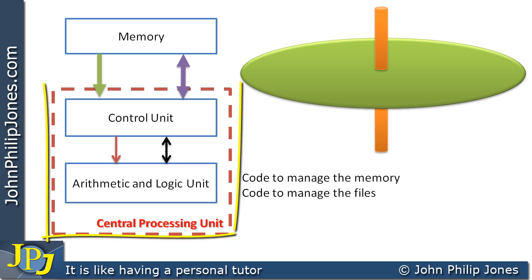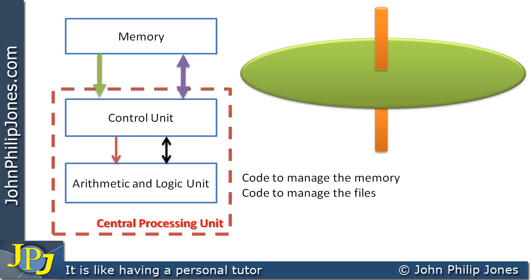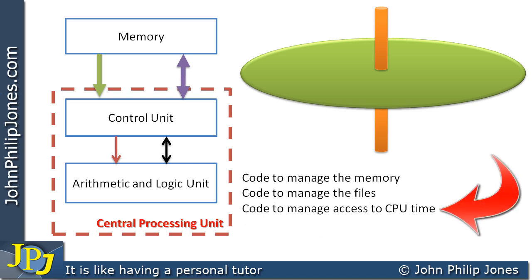Let's now turn our attention to the central processing unit by looking at a particular scenario. Say the computer's memory has two applications: a word processor and a web browser. The web browser is currently executing and downloading a web page. The user then clicks spell check on a document. To the user it appears that both processes are executing simultaneously. In fact, at the machine level, the machine code for one application executes for a brief period, then the operating system switches execution to the other application. The CPU is allocated to each application in turn, so the operating system needs code to manage access to CPU time so every application gets its fair share.